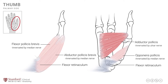The adductor pollicis is innervated by the ulnar nerve, and this is an important innervation — in clinical testing for ulnar nerve injury we actually test for the action of the adductor pollicis. Similarly, when we suspect a median nerve injury, we often examine for the abductor pollicis brevis and look for its action, as well as any atrophy of this muscle at the base of the thumb as part of the thenar group.